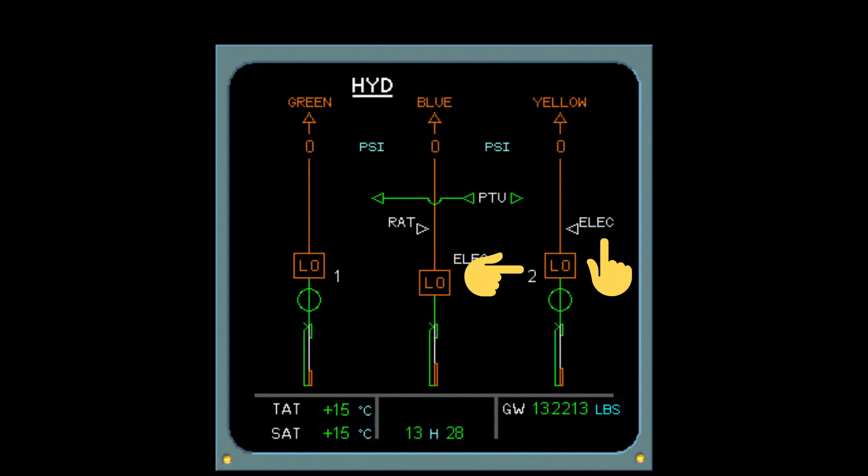The electrical pump is switched off, since the white arrow is disconnected from the line. The manual hand pump is not displayed on the E-CAM page.